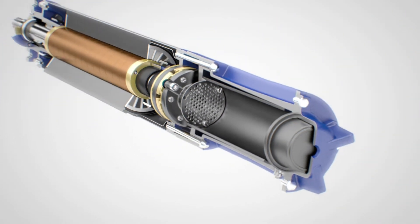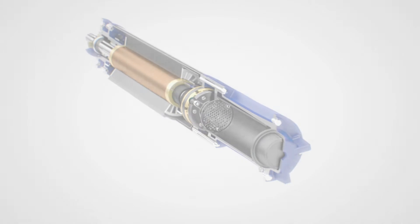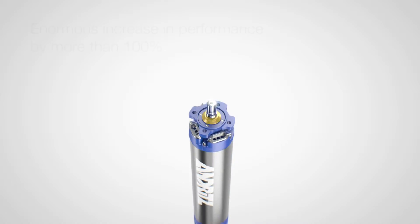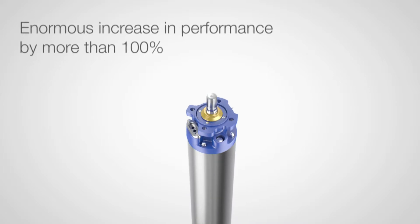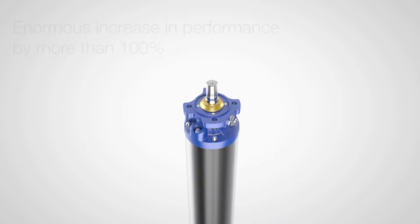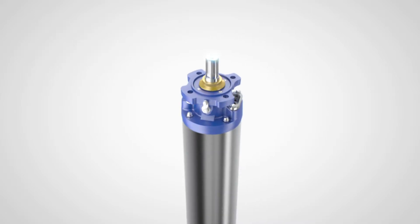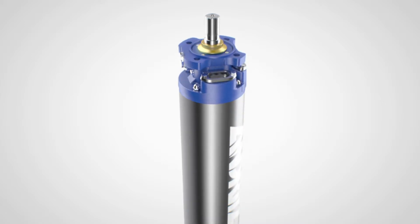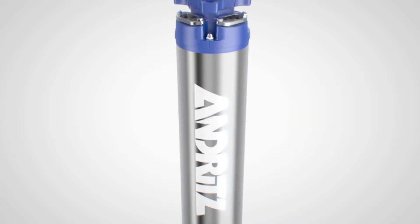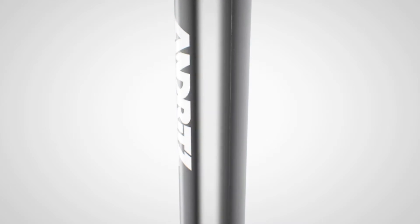IPM motors have a substantially higher performance density than asynchronous motors. For example, the performance of an IPM synchronous motor in the same size of a 45 kilowatt asynchronous motor achieves 100 kilowatts, which is more than 100%. With IPM motors, much higher performances can be achieved from smaller wells. In this way, investment costs can be sustainably minimized.